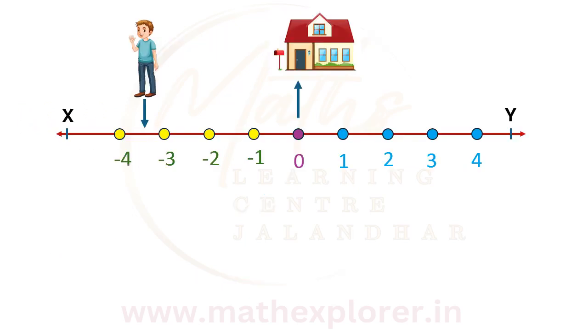As this man is at a distance of 7/2 units on the left of the house, the rational number -7/2 represents the position of this man.